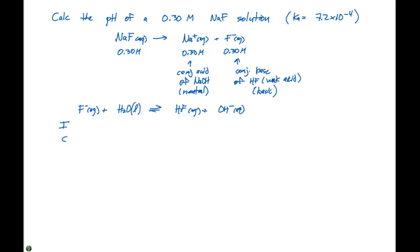We can then set up an ICE table. We know that our initial concentration is 0.30 for the F-, zero for the HF and zero for the OH-. The change in concentration is going to be -X for the F-, +X for the HF and +X for the OH-. At equilibrium, we now have 0.30 - X, X and X.